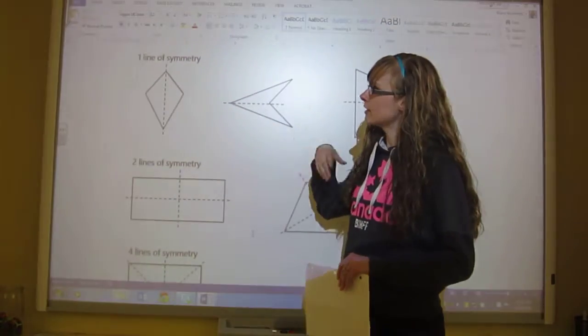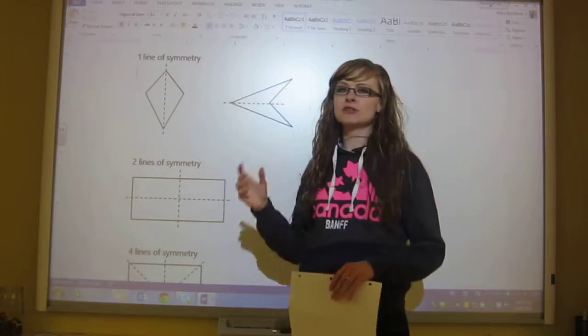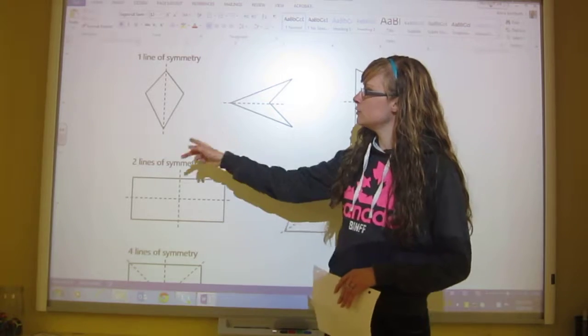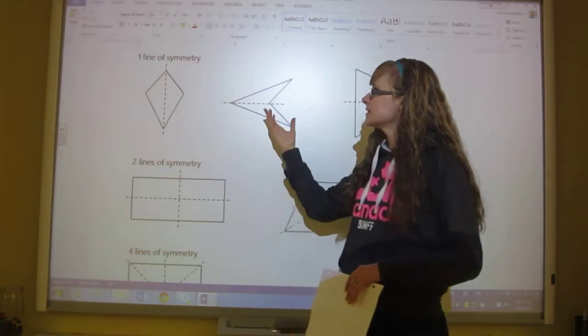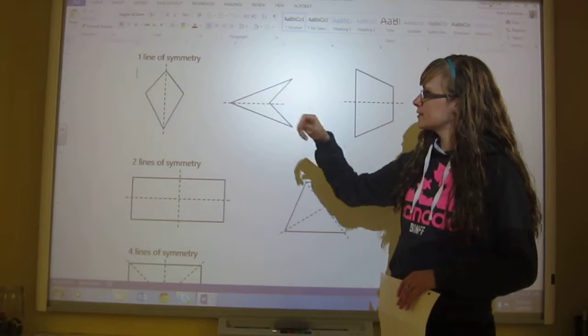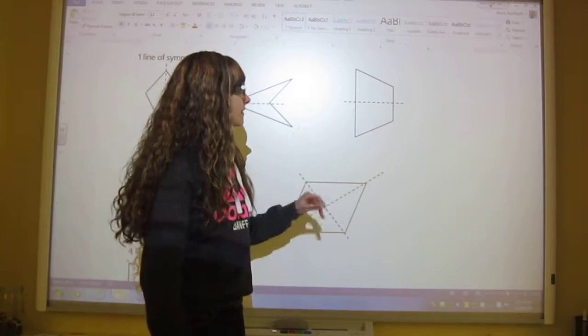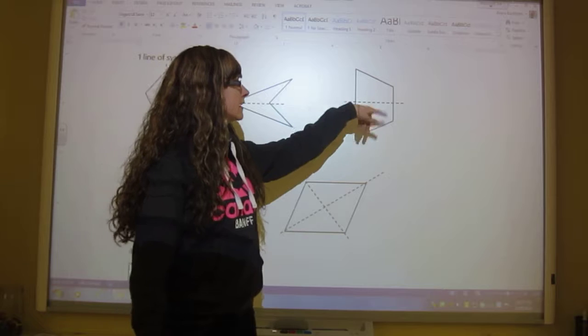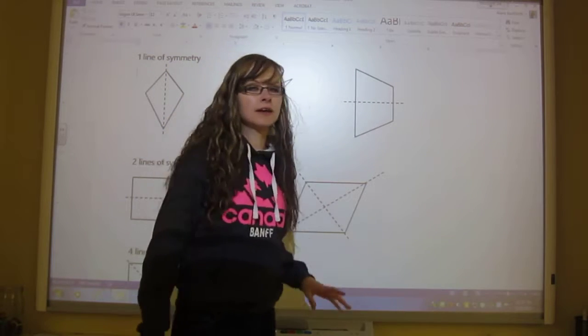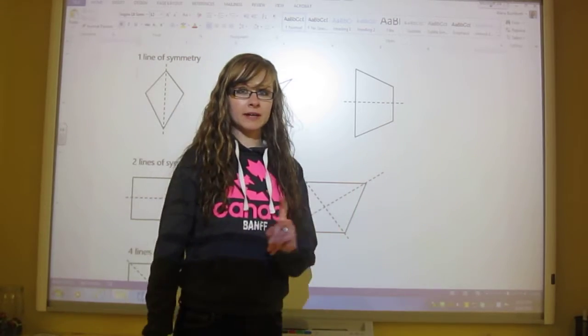Some quadrilaterals have one line of symmetry. So this kite here has one line of symmetry. You couldn't fold it any other way and make it symmetrical, but you could fold it this way. This kite has the line of symmetry this way. You can see very easily that if you folded it, it would be symmetrical. And then we've got this trapezoid here that if you folded it across the middle here it would be symmetrical. You could not do it any other way though. So there's one line of symmetry.